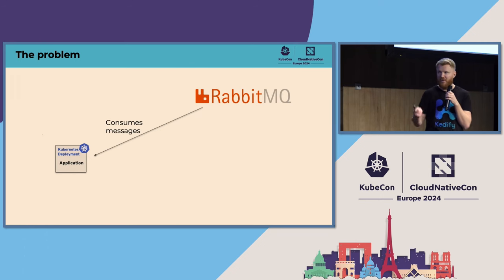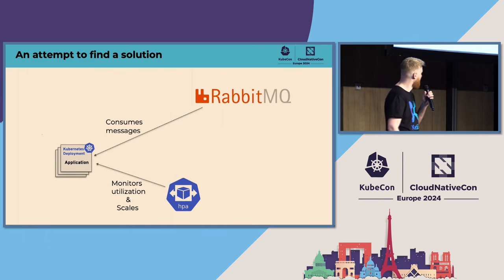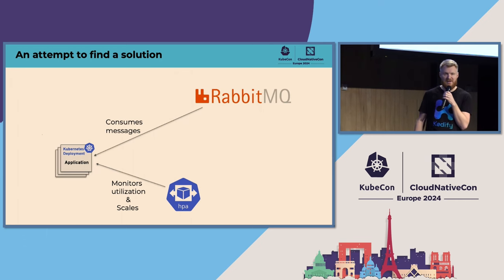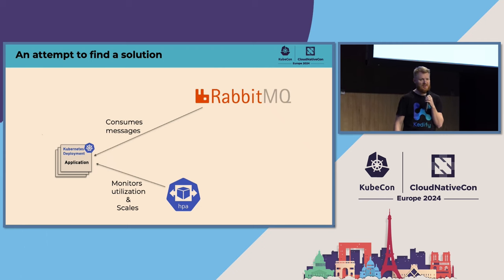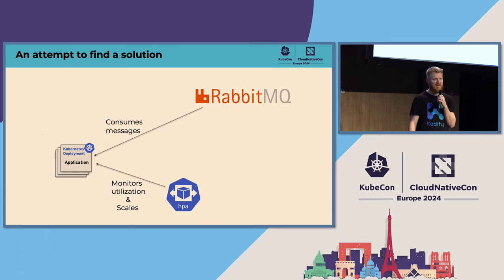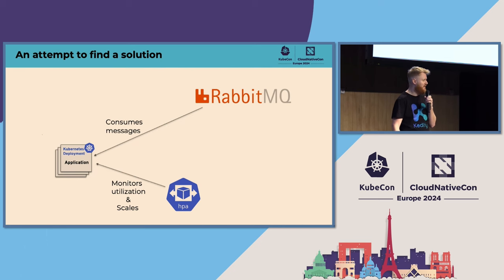So what can we do? We can plug autoscaling into the solution to handle the dynamicity. The first naive approach would be to use HPA, the built-in Kubernetes autoscaler. It's a great tool, but it has limitations — especially in event-driven scenarios — because it monitors CPU and memory on the target workload, which sometimes doesn't correlate with the actual need. We need to scale based on data happening outside the system, like the RabbitMQ queue length. So HPA is not a good fit for this.